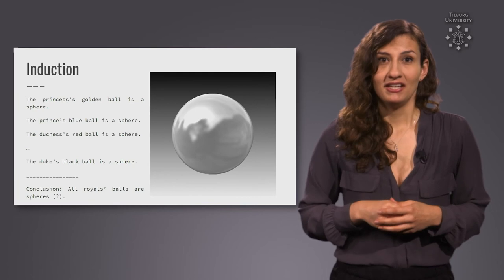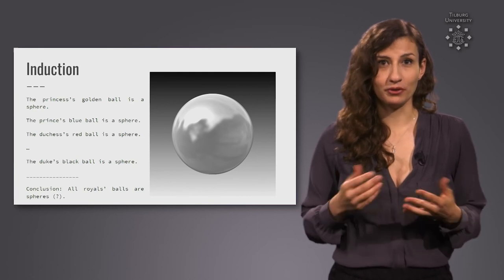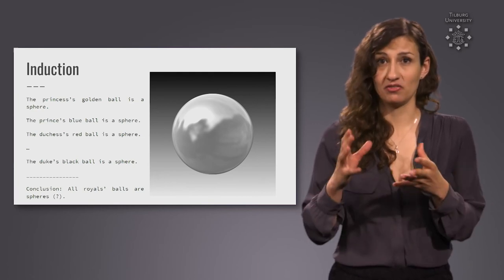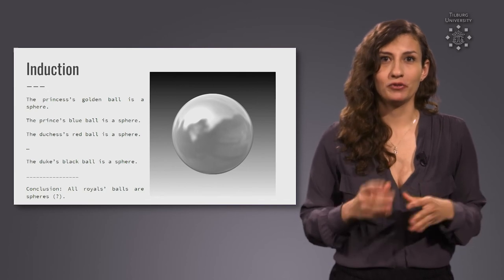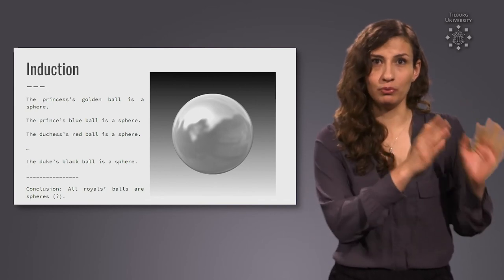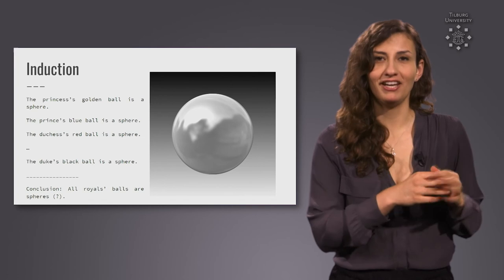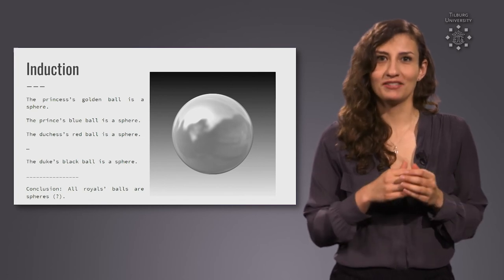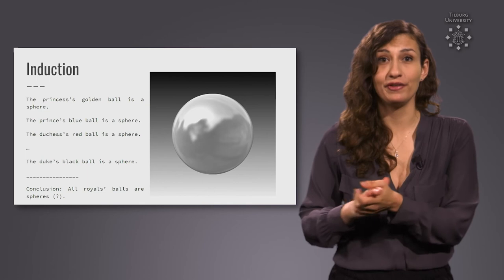For instance, let's say we observe the princess's golden ball and see that it's a sphere. We then observe her brother the prince's blue ball and see it is a sphere. Next, we look at the duchess's red ball and again it's a sphere. We then proceed to check some more royals' balls and find out that they are all spheres.